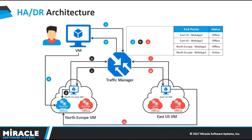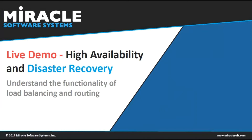So when you hit the traffic manager URL from the East US VM with those endpoints down, North Europe web app two will be responding. In the same way, when you hit the traffic manager URL from the North Europe VM, North Europe web app two will also respond. Only the one which is active will be responding. Now let me start with the demo.